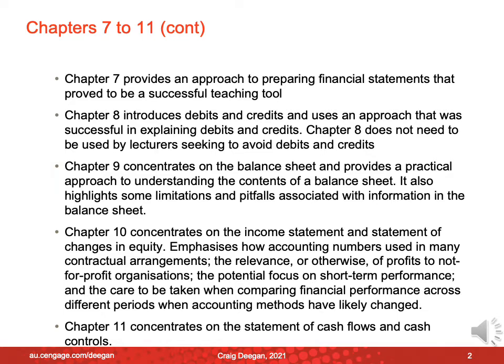Chapter 10 concentrates on the income statement and the statement of changes in equity. We'll talk about how accounting numbers in those reports are often used in contractual arrangements, the relevance of measures like financial profits to not-for-profit organisations, how profit measures often focus on short-term performance, and why we need to be careful comparing profits across periods because accounting methods and standards often change, which influences profit measures.